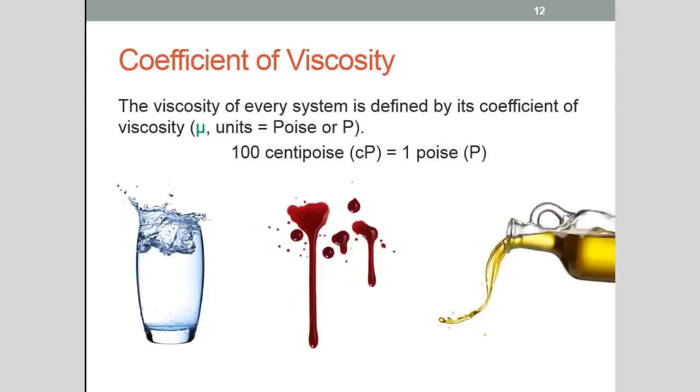So remember the higher the number the more viscous the system is. Okay so out of these three different systems we've got water, blood, and oil. Water is the least viscous therefore and you'll see that the coefficient of viscosity of water is only one CP or one centipoise. Blood which is a little bit more viscous has a coefficient of viscosity of 10 CP and olive oil.